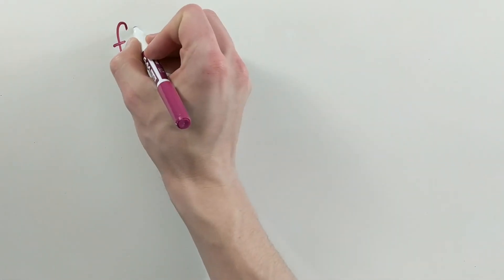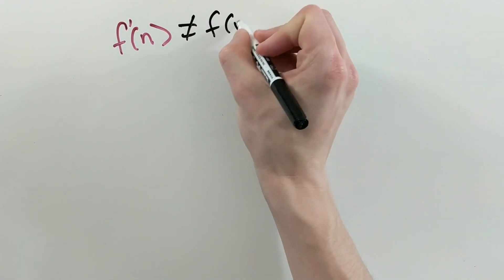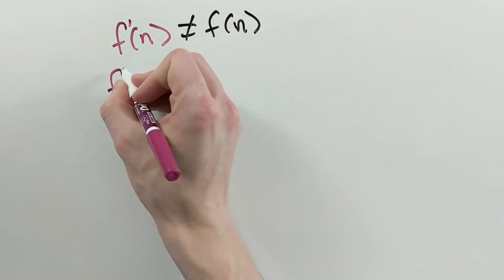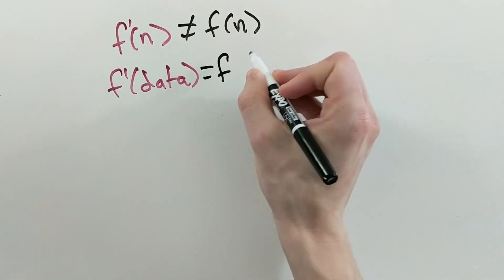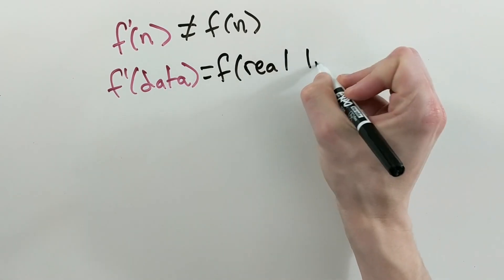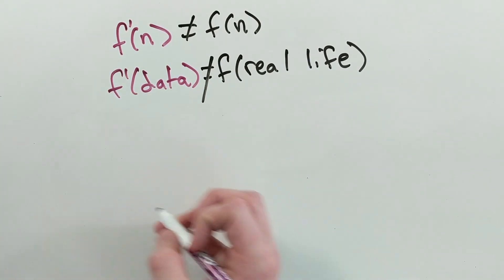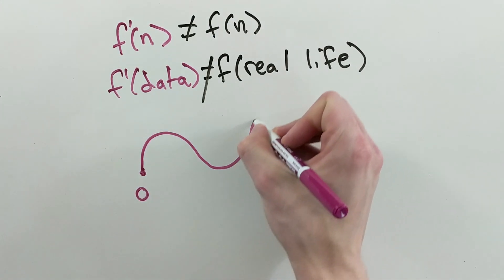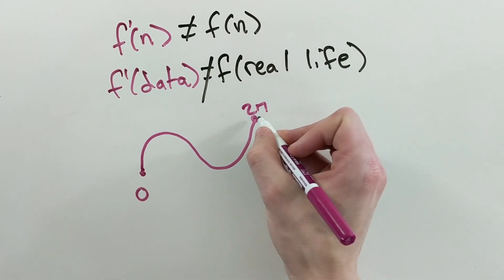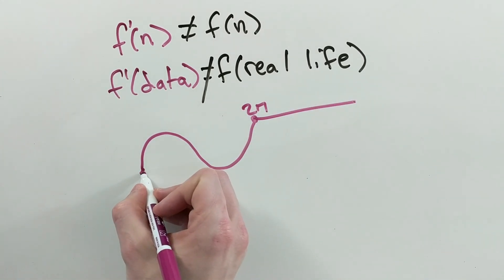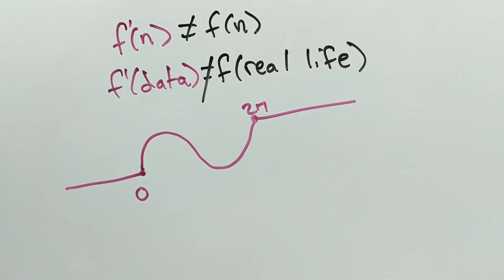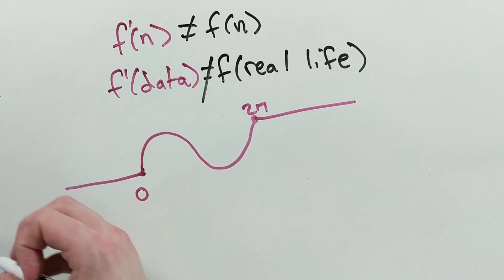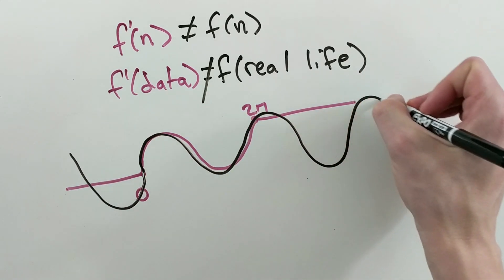However, this doesn't guarantee that the network is modeling the actual function. It guarantees that it is possible to model that function, but in reality, your neural network is modeling the function over your dataset. For instance, if you were trying to model a modified sine function with a collection of data points between 0 and 2pi, it's entirely possible that the function the network actually finds looks like this, where before this range it always predicts 0, and after this range it always predicts 1, even though we know the sine function actually looks roughly like this.